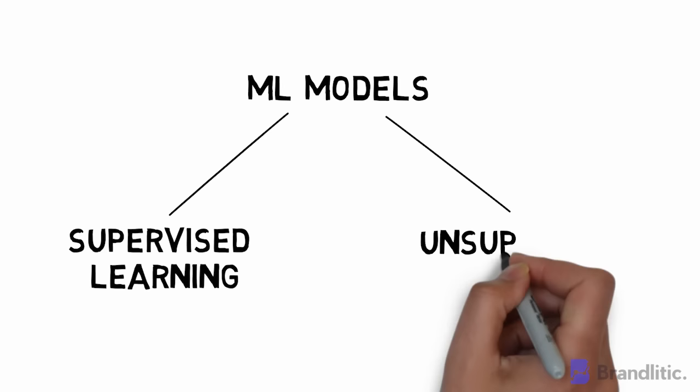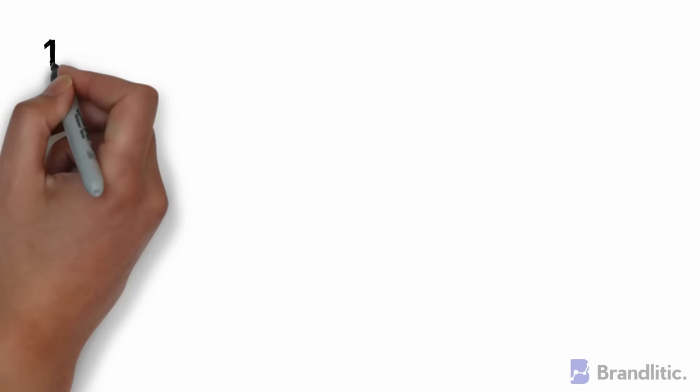Broadly speaking, all machine learning models can be categorized as supervised or unsupervised. We'll uncover each one of them and what all types they have.